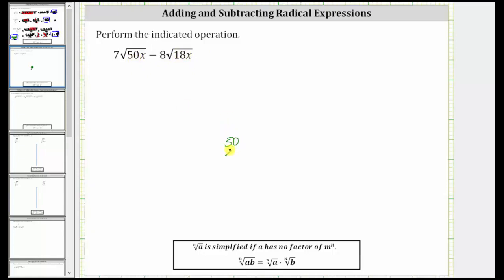50 is equal to two times 25. Two is prime, and 25 is equal to five times five, and five is prime. 18 is equal to two times nine. Two is prime, and nine is equal to three times three, which is prime.